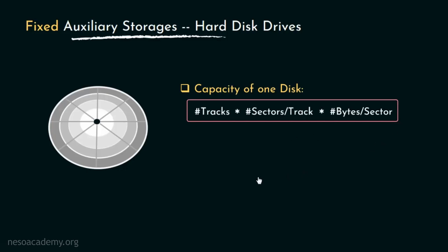However, we are unable to use the full capacity of the disk due to the memory occupancy of the intersector gap, also known as the format, which keeps track of various information like the sector number, track number, whether the sector is full or free for use, etc. Thus, a significantly small amount of memory is wasted due to formatting.